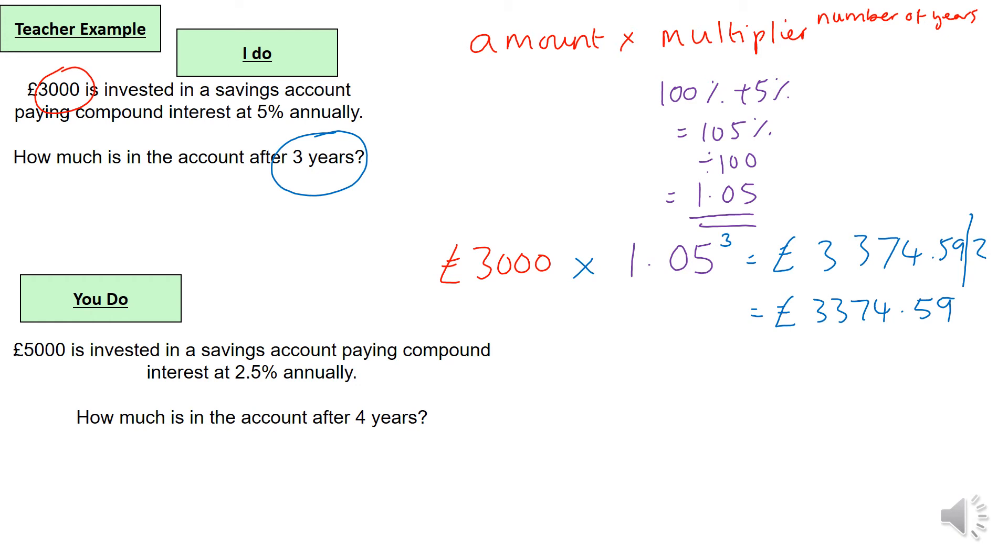What you should have got is the amount, which is five thousand, times by one point zero two five, which would be the multiplier, to the power of four, which gives you a final answer of five thousand five hundred and nineteen pounds point zero six four, which rounded to two decimal places gives you this.